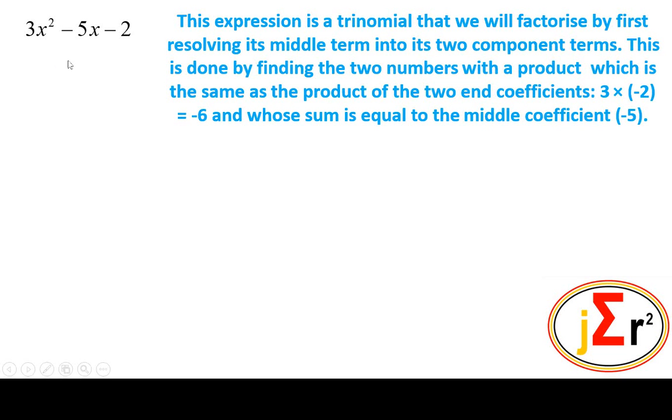Those two numbers with a product of negative six and a sum of negative five will be the coefficients of the two middle terms which will replace this and which will cause this trinomial to be in what I know to be the quadratic or four term form. There we have it. The two numbers with a product of negative six, same as this, and a sum of negative five is negative six and one.